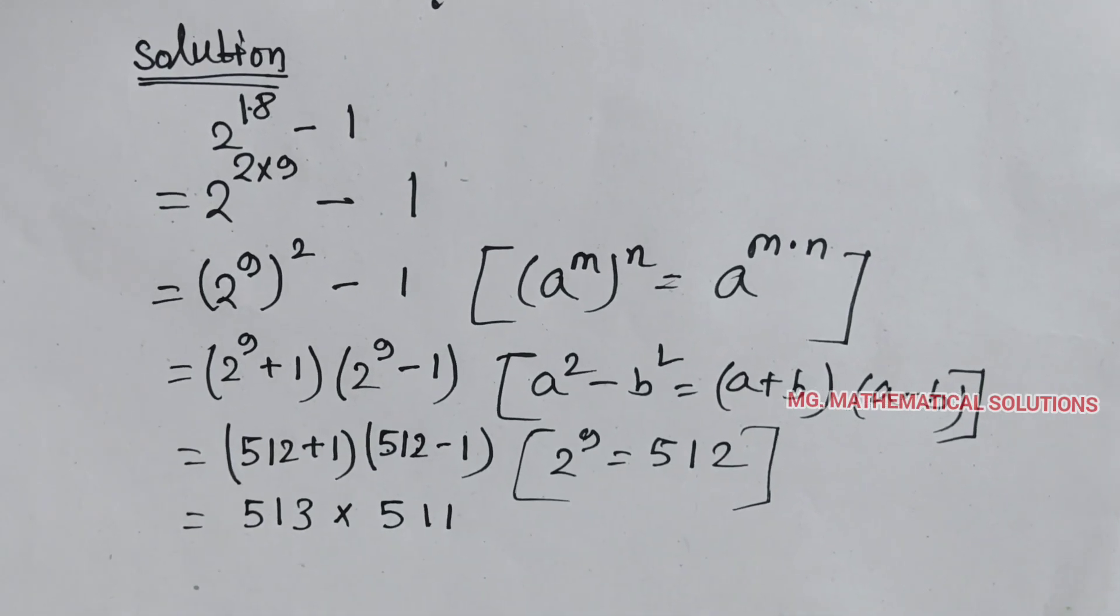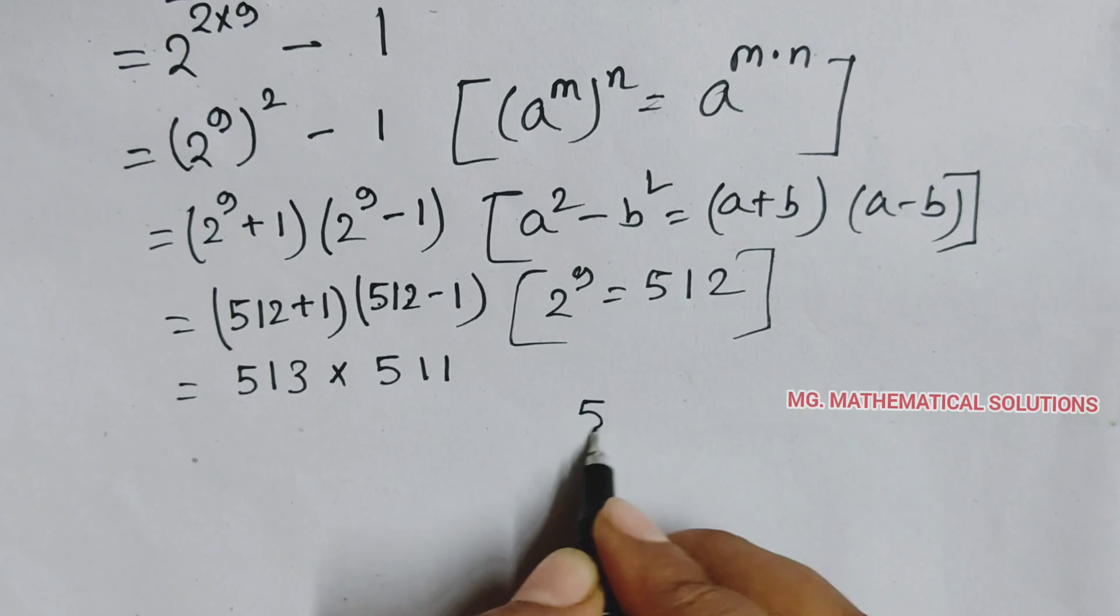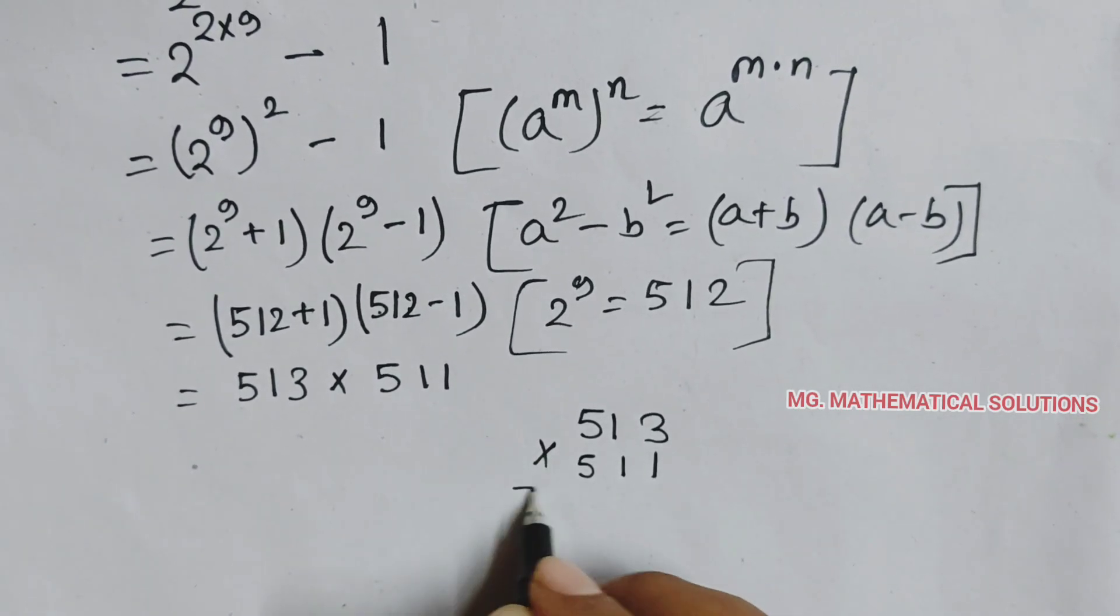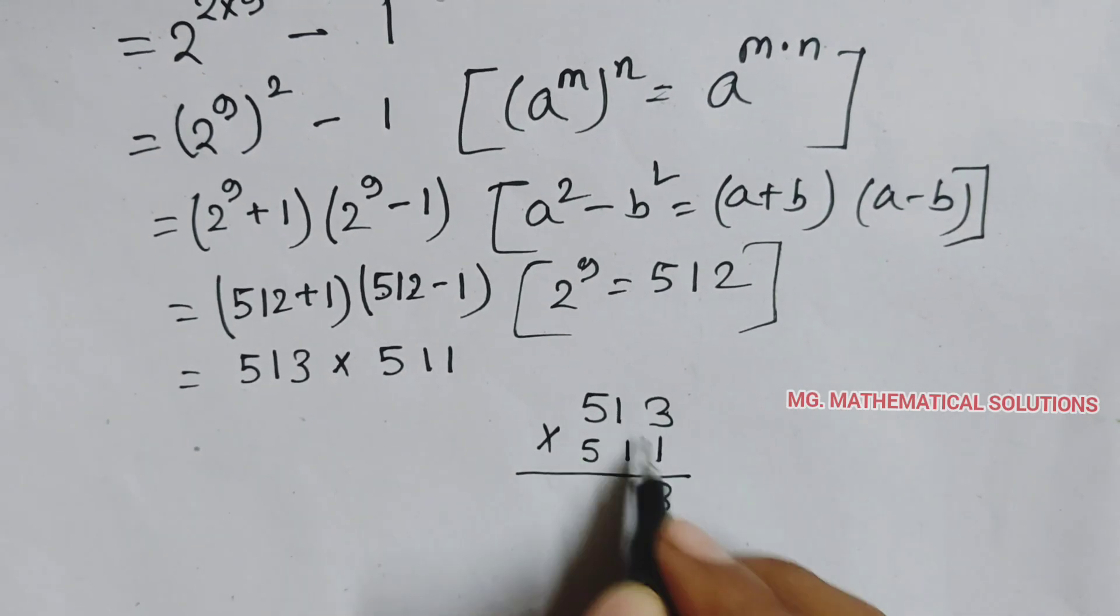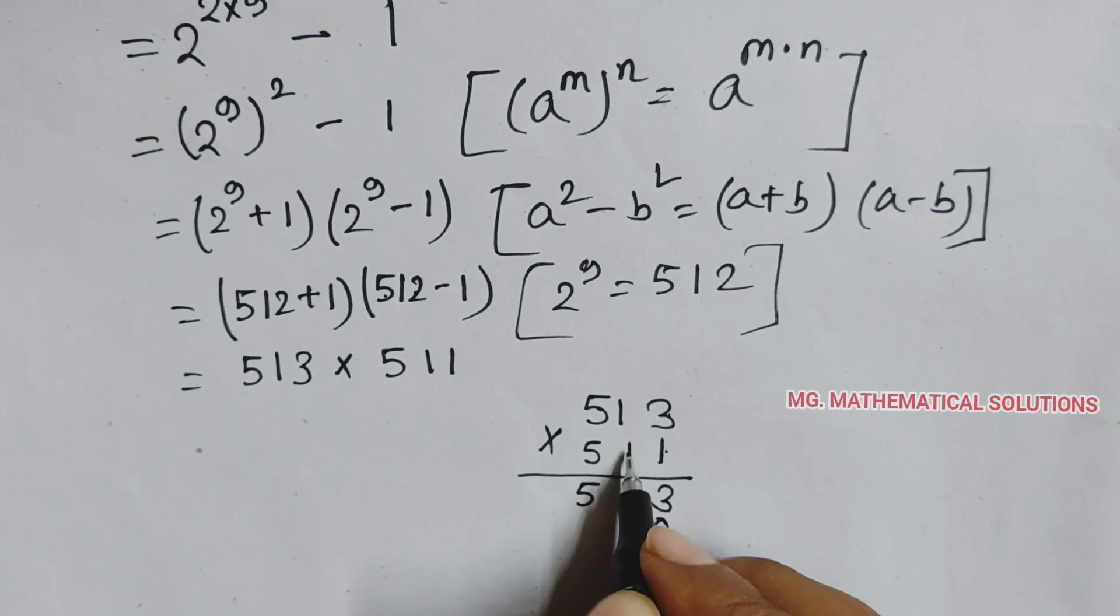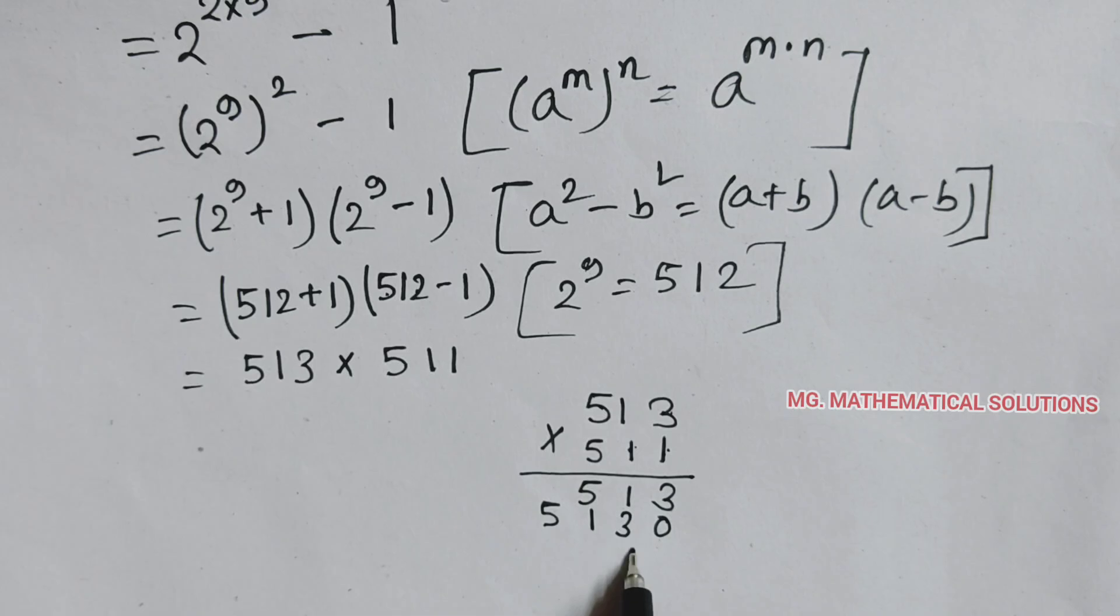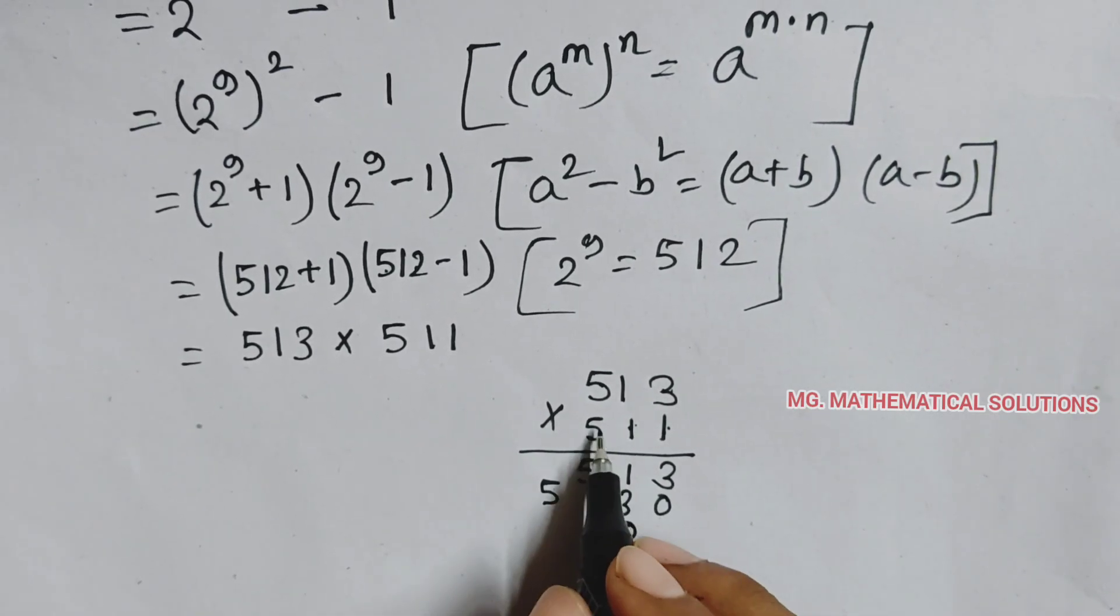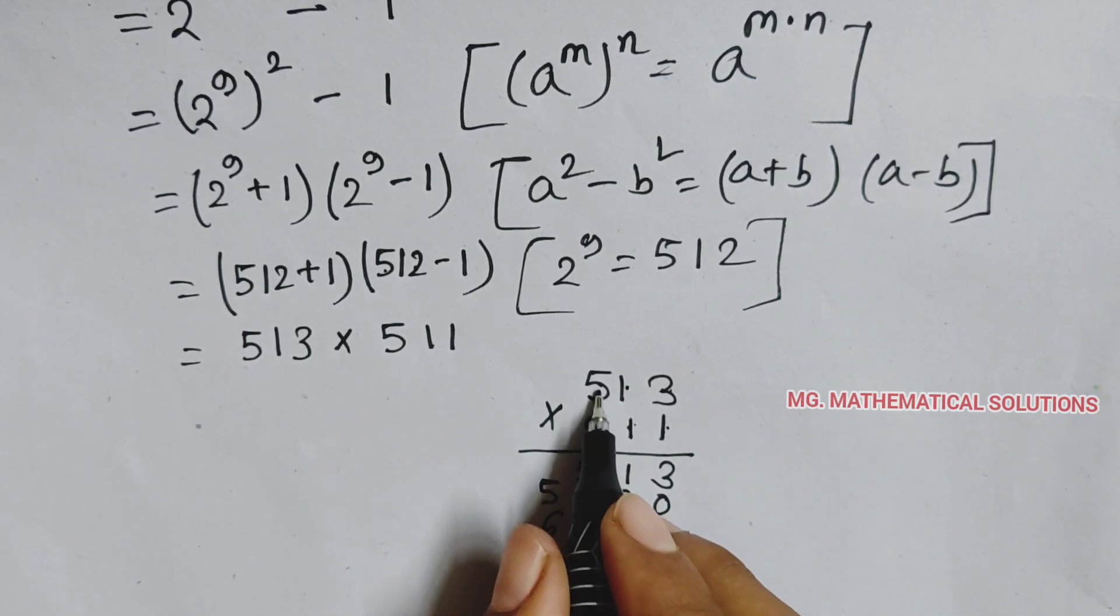Now we multiply both. So here we use cool method: 513 into 511. Equal to 3 times 1 means 3, 1 times 1, 1, 5 times 1, 5, 1 times 3, 3, 1 times 1, 1, 5 times 3, 15, 5 times 1, 5, plus 1, 6, 5 times 5, 25.